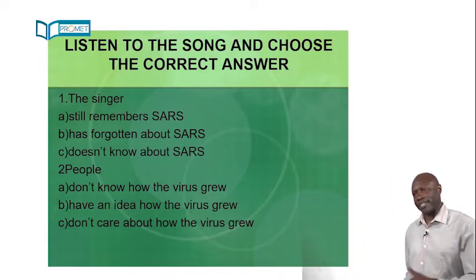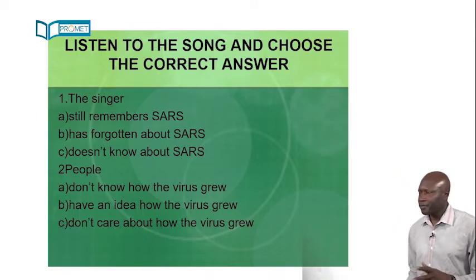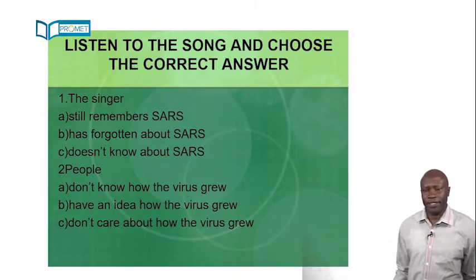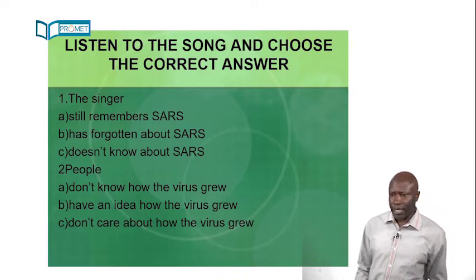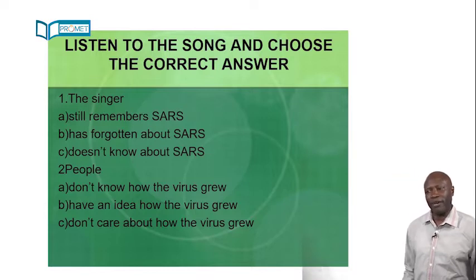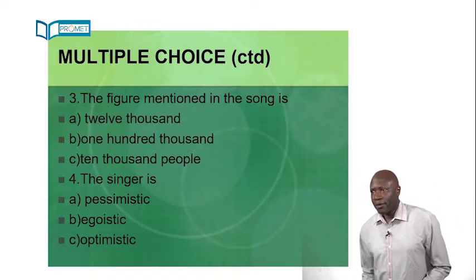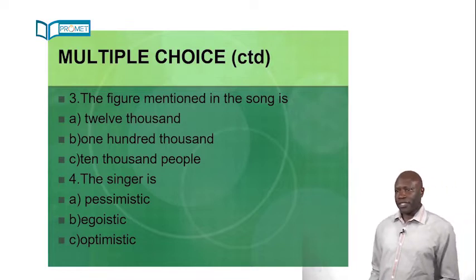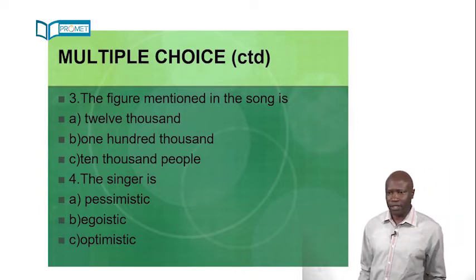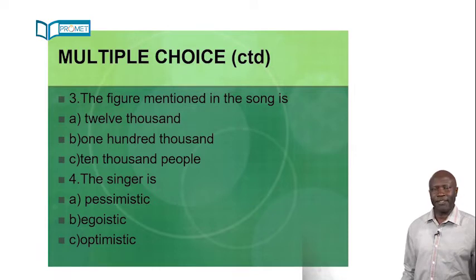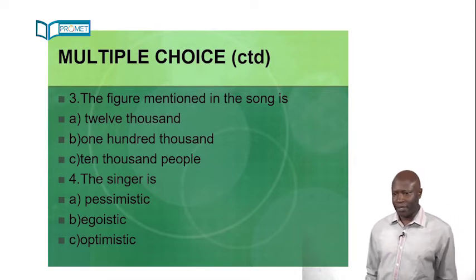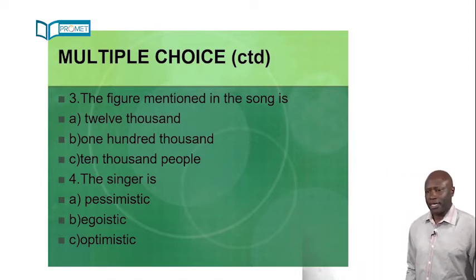Number one. The singer still remembers SARS, has forgotten about SARS, or doesn't know about SARS. Number two. People don't know how the virus grew, have an idea how the virus grew, or don't care about how the virus grew. And for the statement three, the figure mentioned in the song is 12,000, 100,000, or 10,000. And for the last one, the singer is pessimistic, egoistic, or optimistic.